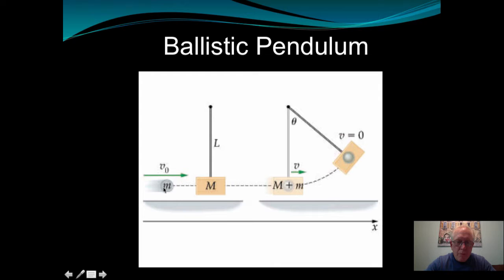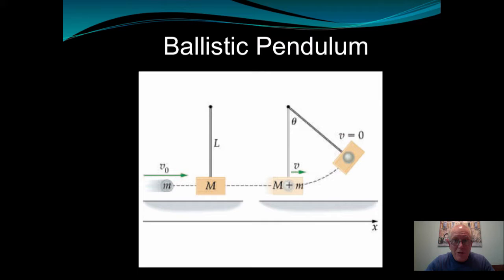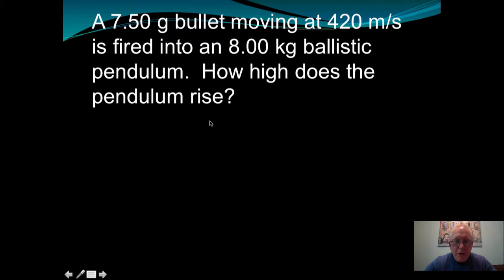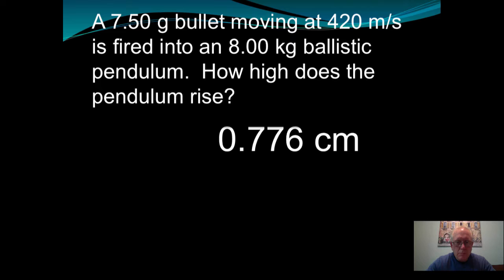A ballistic pendulum is another application: a bullet is fired into a wooden block, which then rises in the air. This avoids friction complications in determining the bullet's initial speed. The bullet embeds in the block and the block swings upward — you need to find how high the pendulum rises. This combines momentum and energy considerations. My answer was 0.776 centimeters.